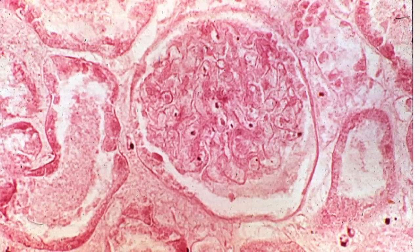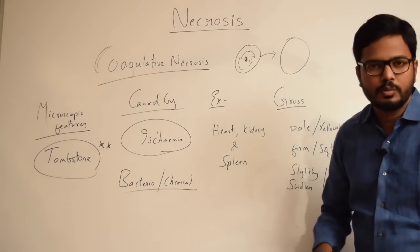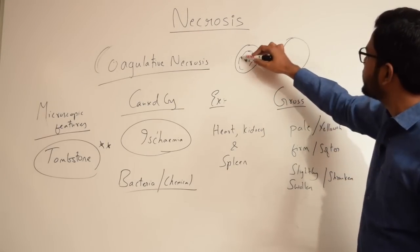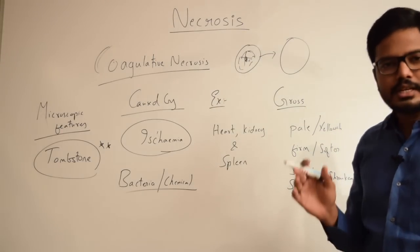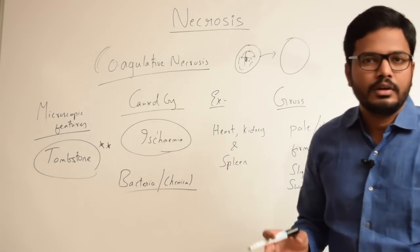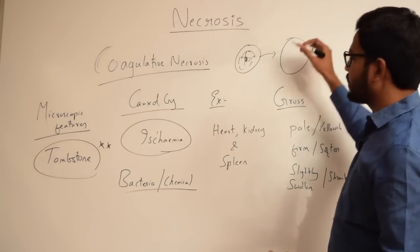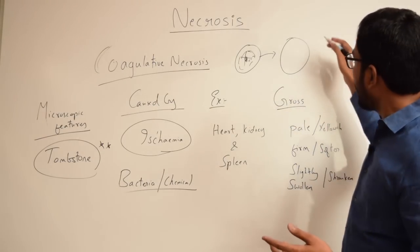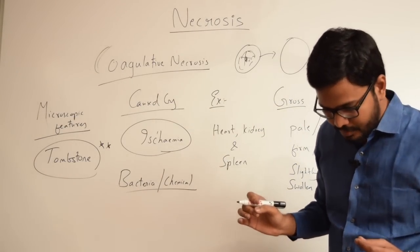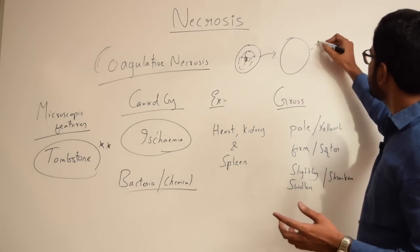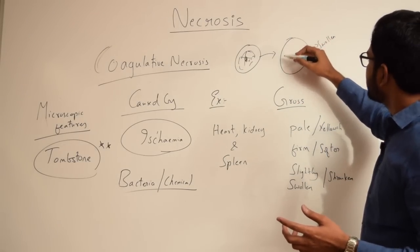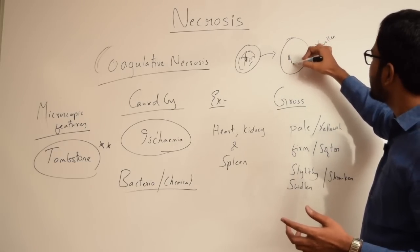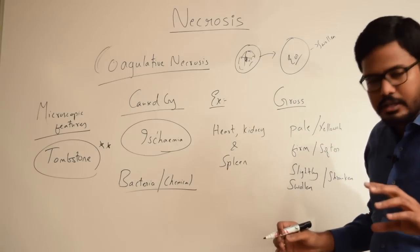Consider a normal cell with nucleus and cytoplasm containing various organelles. This normal cell is converted into its corresponding tombstone where the cell outline is retained, whereas the nucleus and cytoplasm are completely lost. This is the characteristic histologic feature of coagulative necrosis. Because of this tombstone appearance, we are able to identify that particular tissue even though it has necrotized, because the cell outline is still intact. Additionally, a necrotized cell appears slightly swollen and the inner cytoplasmic content appears more eosinophilic.